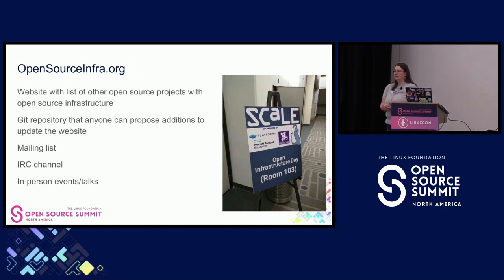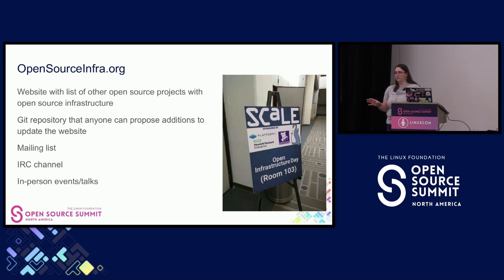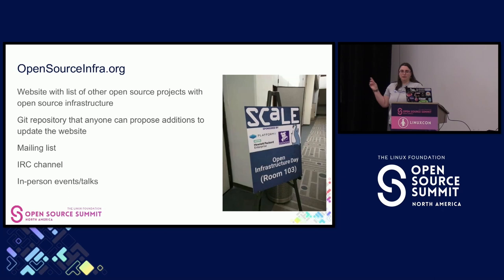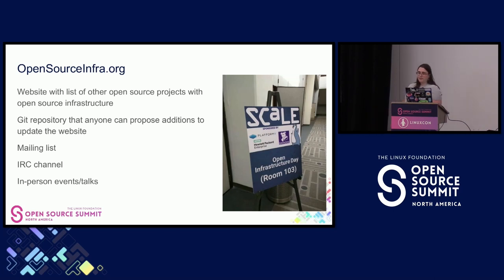It turns out we were not alone. To address this feeling of isolation, I got together with some colleagues and we created opensourceinfra.org, hosted on a VPS I still run. What we did was collect other open source projects that were also running their infrastructure in public. We now have a list of about 30 projects on that website. We started collaborating through a mailing list, did a couple of in-person meetings — one at SCALE several years ago — and our website is on GitLab. We built a community that didn't exist before, of people who cared about the same things.